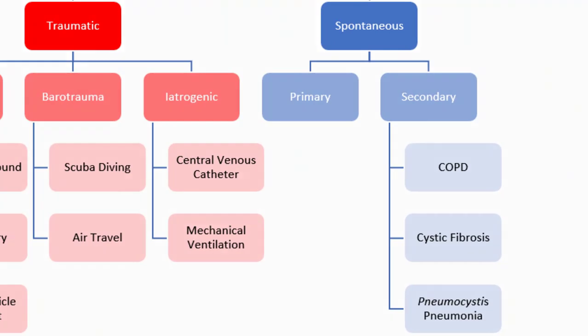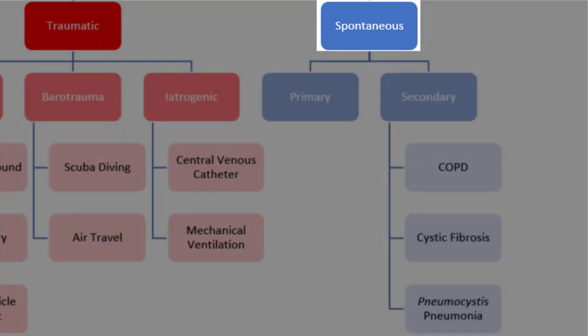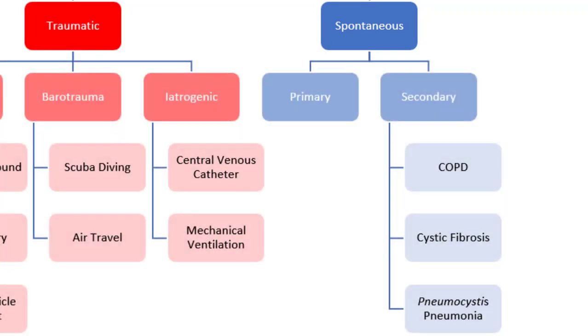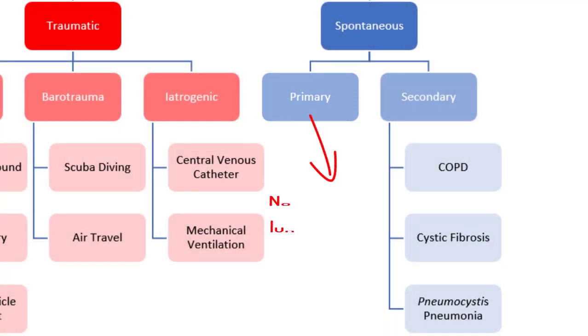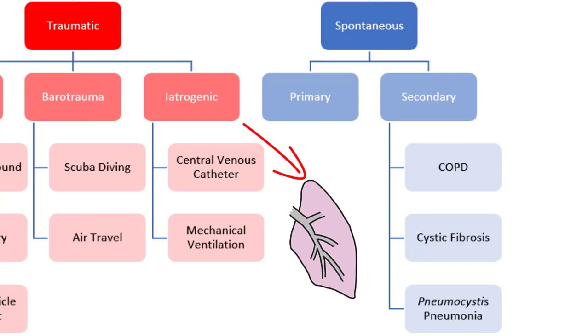Conversely, spontaneous pneumothorax occurs in the absence of any traumatic injury. Spontaneous pneumothorax can be further divided into two categories. Primary spontaneous pneumothorax occurs in the absence of any predisposing lung disease. This involves the rupture of a small bleb on the surface of the lung. It most often occurs near the lung apex, and this is thought to be related to high mechanical stress that can occur in this region.